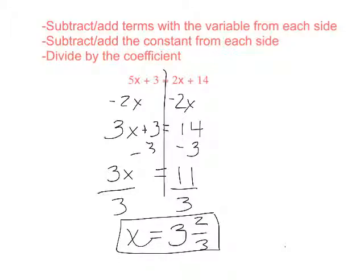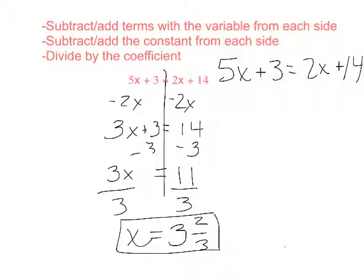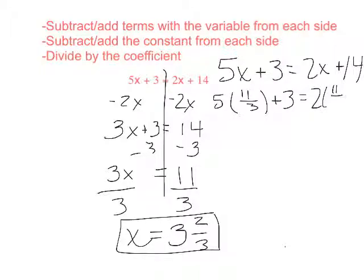Since I have no picture to go by, I'm going to do a check. So 5x plus 3 equals 2x plus 14. In my check I would do 5 times — I'm going to change this back to 11 thirds, because 11 thirds is the same thing as 3 and 2 thirds — equals 2 times 11 thirds plus 14.